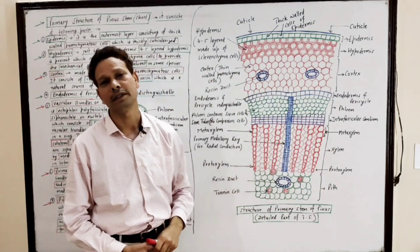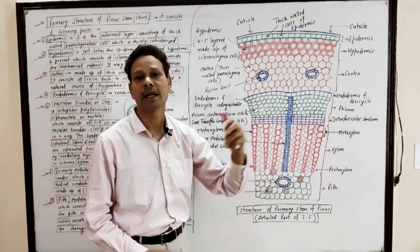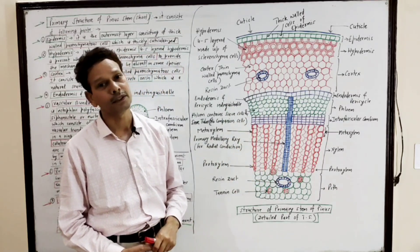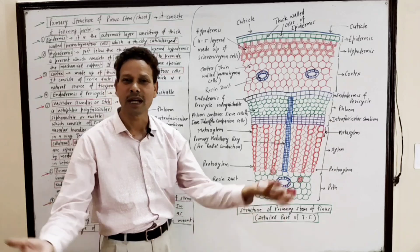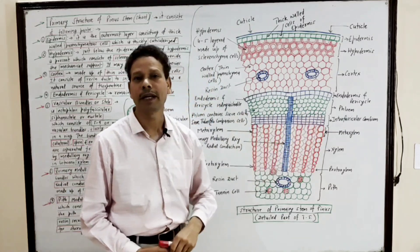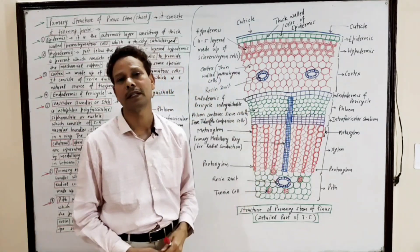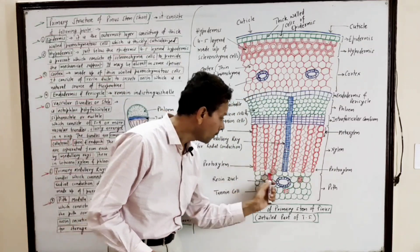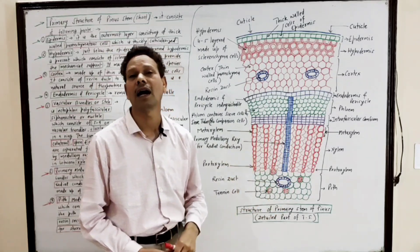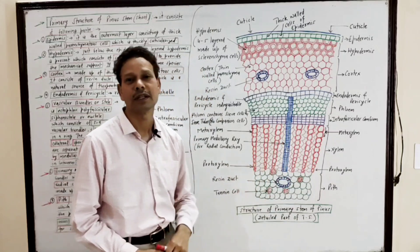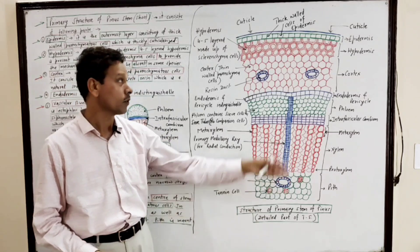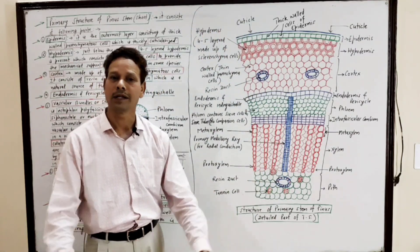The vascular bundles, or stele, are conjoint — both xylem and phloem are present. Both are on the same radius, so these are collateral. Between phloem and xylem a meristematic cambium strip is present, so it is open. The protoxylem faces towards the center, so it is endarch. Dear students, the central region is the pith, involved in storage of food. This is all about the primary structure of Pinus stem.